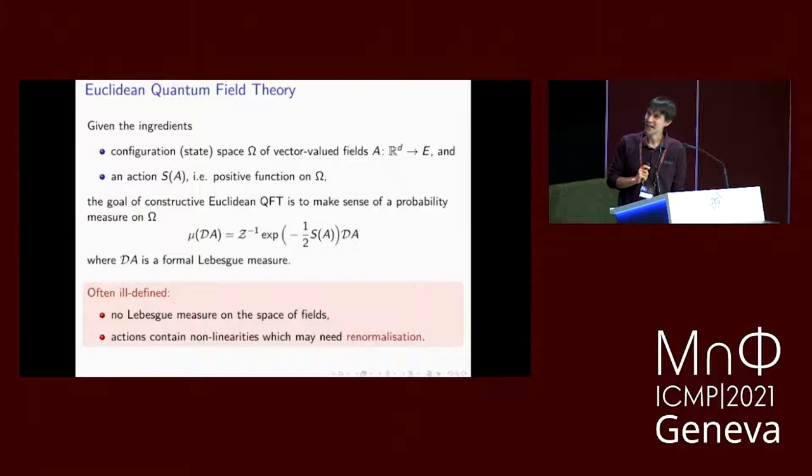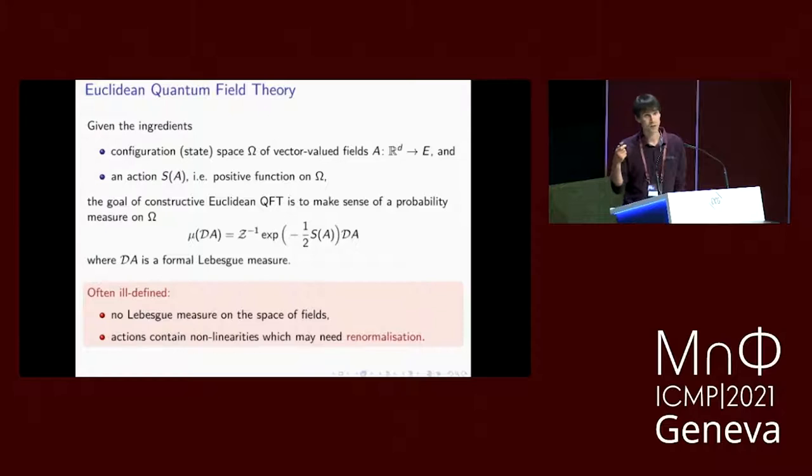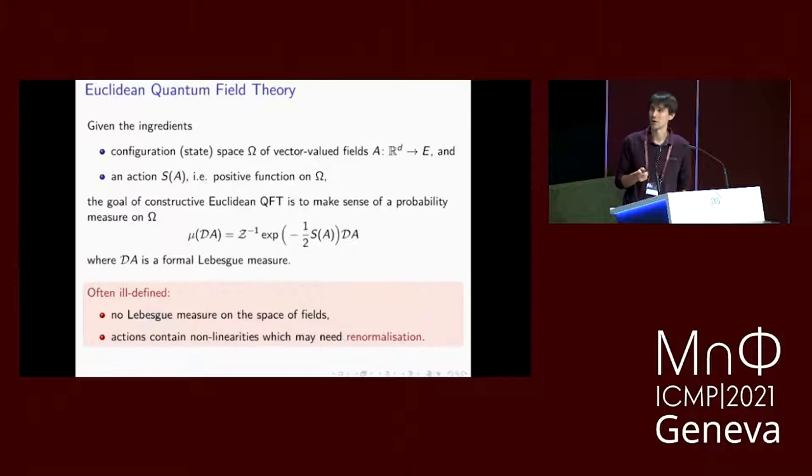As many people are aware, this is typically a very ill-defined object. To begin with, there's no Lebesgue measure on the space of fields — it's an infinite dimensional space. On top of this, actions typically contain nonlinearities, and these nonlinearities typically need renormalization to be made sense of, because we expect this probability measure to be supported on distributions rather than functions, and there's no analytically well-defined way to multiply distributions.